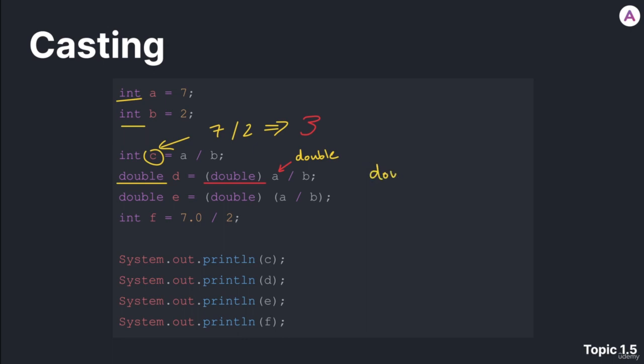Notice that if this were the statement, double d equals a divided by b, this would not work. Because we're trying to assign the value yielded by a divided by b, these two integers, it's still an integer. We can't assign an integer to a double.